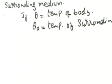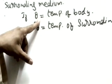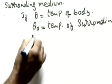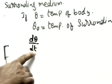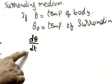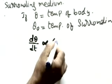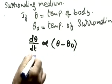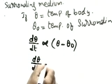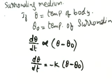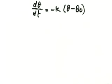Let me write the law mathematically. Let θ be the temperature of the body and θ₀ be the temperature of the surroundings. The rate means dθ/dt — differentiation with respect to time. So the rate of change of temperature is proportional to (θ − θ₀). Removing the proportionality, we get the constant: dθ/dt = −k(θ − θ₀). We use minus k because the temperature is decreasing.